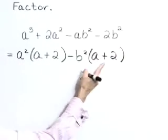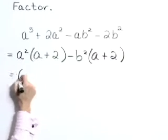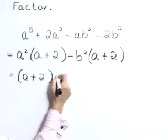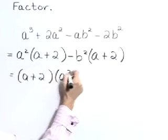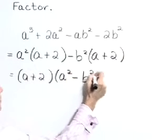At this point, we have a common factor of a plus 2. Bring that out to the front. Let's write this as a plus 2 times a squared minus b squared.